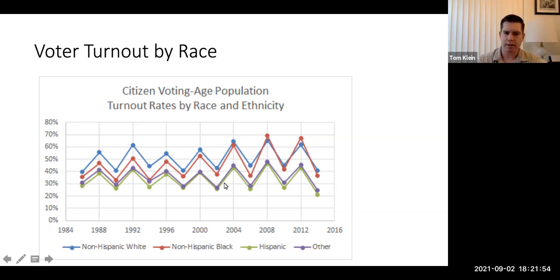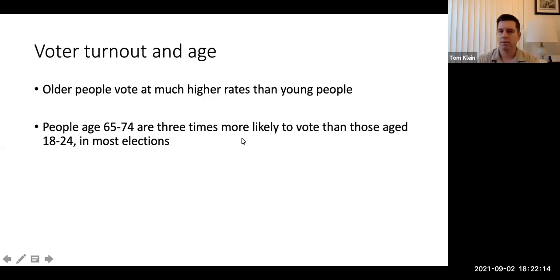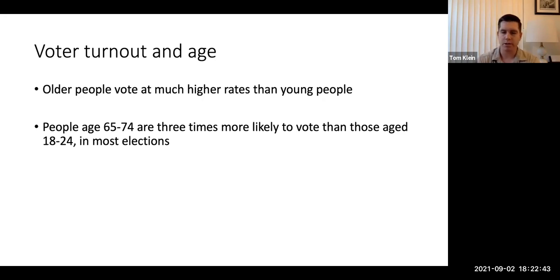You can see Hispanic and other races are slightly lower as well. Age is a big indicator of whether or not you will vote. Older people vote at much, much higher rates than younger people. The age group of 65 to 74 are three times more likely to vote than those aged 18 to 24. 18 to 24 year olds really do not show up to the polls. It strikes me as odd because that generation is very socially active and politically aware, but for whatever reason that doesn't really translate to showing up to the polls. I encourage you to vote — it obviously makes a difference.